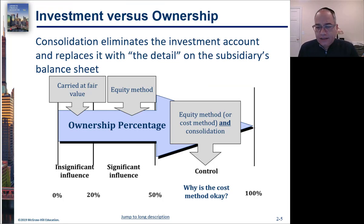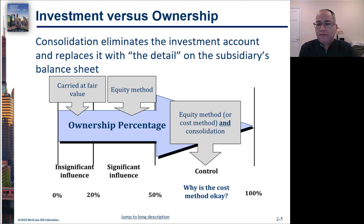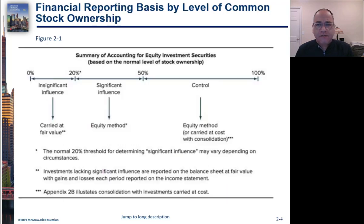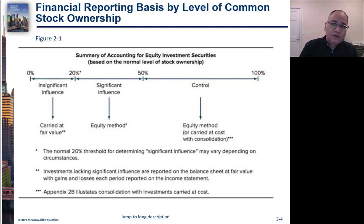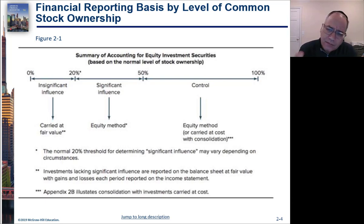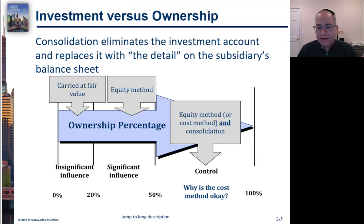When you consolidate, consolidation essentially eliminates whatever method you used before, because it takes out all the intercompany transactions and treats the two companies as if they're one. So it's not necessary that you use the equity method when you have control — there are other ways to account for it. Whatever method you use in your books, when you consolidate you're going to undo that and treat the two companies as one.